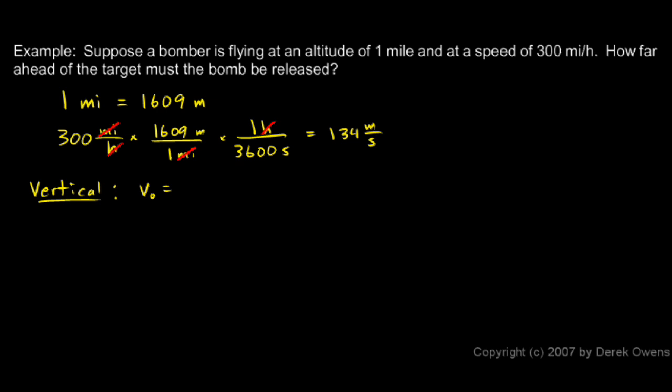V zero, the initial velocity vertically is zero. The plane's flying horizontally. The acceleration will be 9.8 meters per second squared. This is assuming that down is the positive direction. And then I can say the initial position is zero and the final position is 1,609 meters.